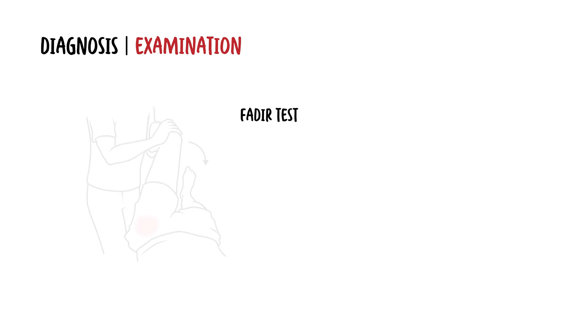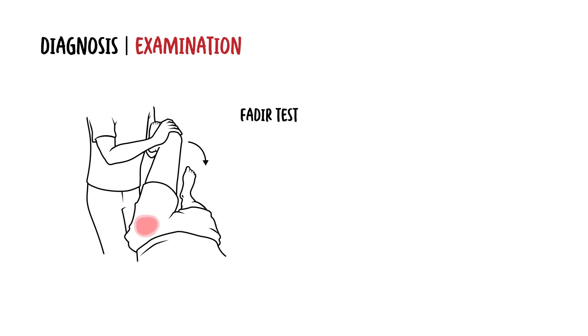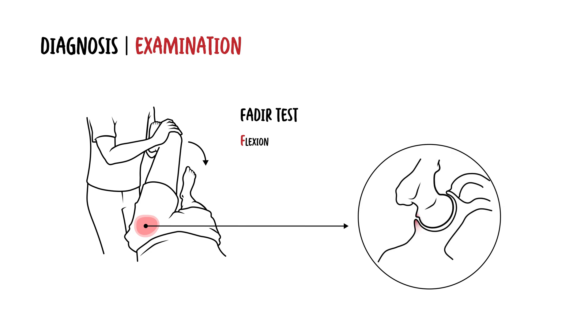Diagnosis is made based on a combination of clinical features and imaging. On examination, pain is typically reproduced by the FADIR test, where you flex the hip, adduct the hip, and apply internal rotation — FADIR.